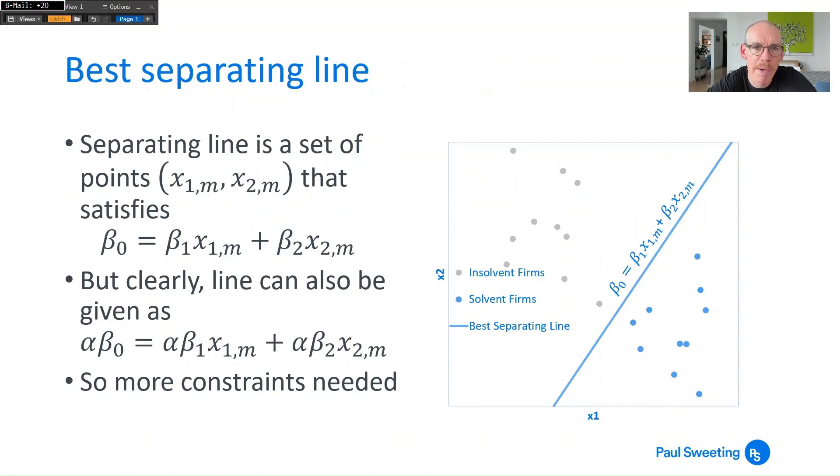Now the best separating line is a set of points measured by x₁ₘ and x₂ₘ that satisfies this equation here: β₀ equals β₁x₁ₘ plus β₂x₂ₘ. Now that's fine but it should be clear that this is scalable - you can multiply everything through by alpha where alpha could be anything at all and you still got the same line, so you need to add a few more constraints to make sure that you've got a unique line.